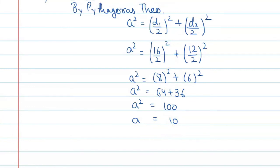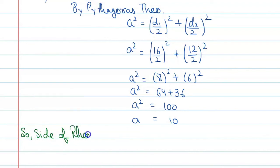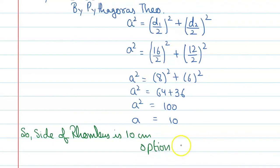The side of the rhombus is 10 centimeter, and the correct option is D. Thank you, I hope your doubt is clear with this video.